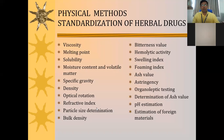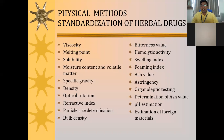Additional physical constants include astringency, organoleptic testing, determination of ash value, pH estimation, and estimation of foreign material. Viscosity is the first parameter: it is an expression of resistance to flow of a system under an applied pressure. For example, castor oil has a viscosity of one thousand centipoise (CP is the unit for viscosity).